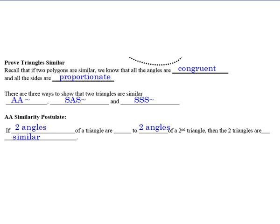The first one is angle-angle similarity, and then we have side-angle-side and side-side-side similarity. Angle-angle similarity is pretty nice because it basically just says if two angles of a triangle are congruent to two angles of a second triangle, then we are allowed to say that those triangles are similar.